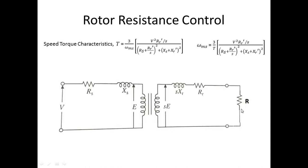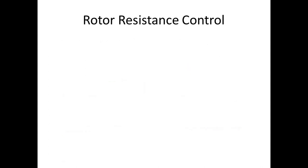Considering the equivalent circuit, we add an external resistance R to the rotor circuit, which adds to Rr. By varying this added resistance, we can vary the speed. That is the principle of rotor resistance control.